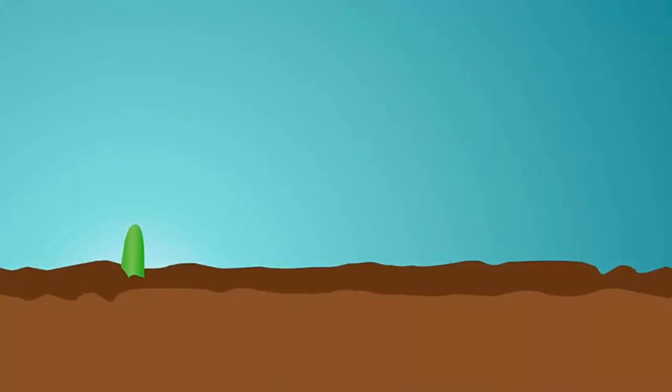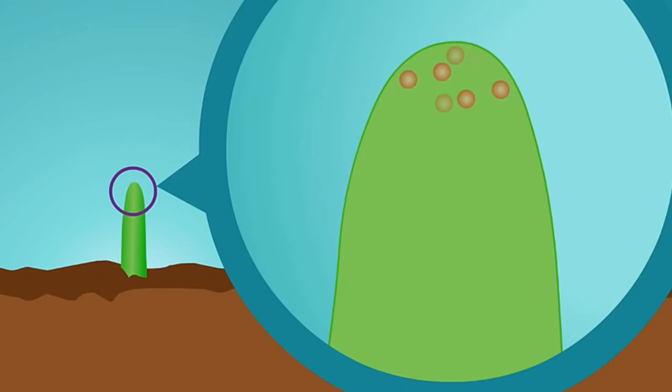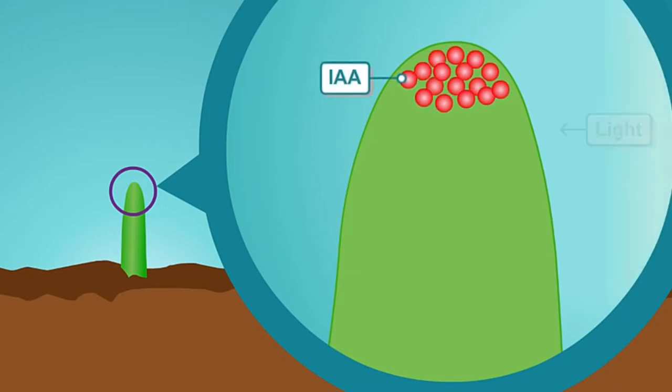The auxin IAA is produced at the apex of the stem. Under unilateral light shining on one side, IAA is redistributed to the shaded side, creating a gradient of the hormone across the stem.